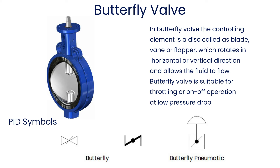In a butterfly valve, the controlling element is a disc called a blade, vane, or flapper, which rotates in a horizontal or vertical direction and allows the fluid to flow. Butterfly valve is suitable for throttling or on-off operation at low pressure drop.